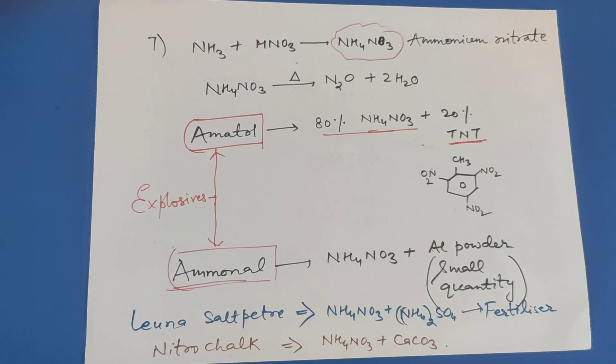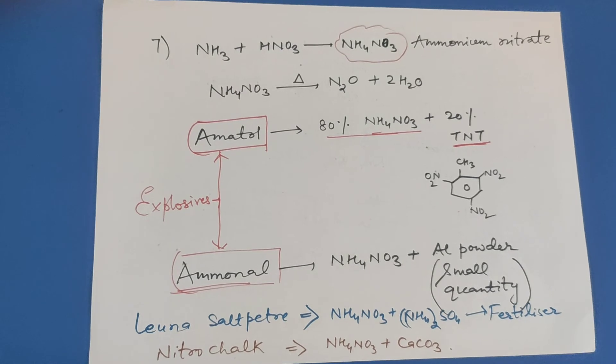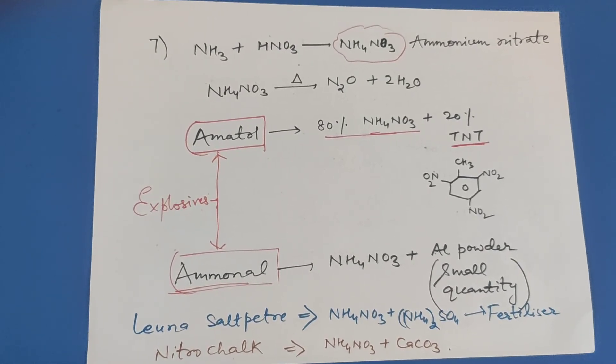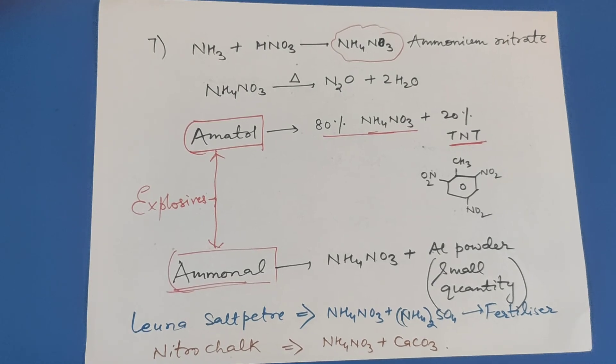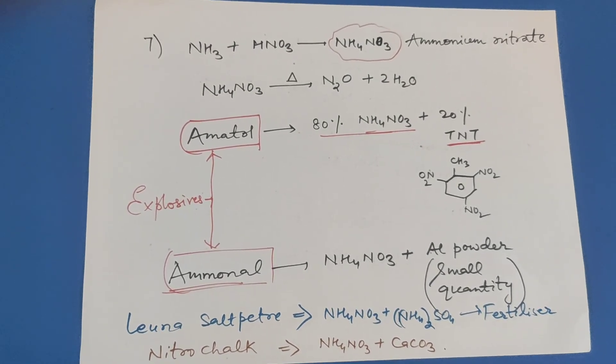Ammonol is ammonium nitrate plus aluminum powder in small quantity. Now Luna saltpeter: Luna saltpeter is ammonium nitrate plus ammonium sulfate used as fertilizer. And nitrochalk is ammonium nitrate plus calcium carbonate.